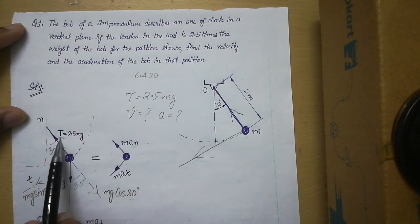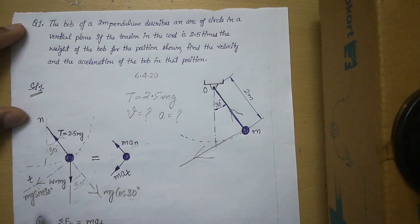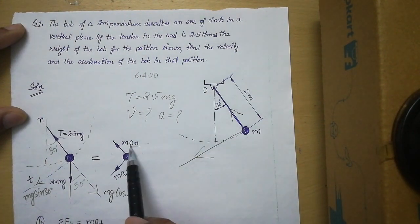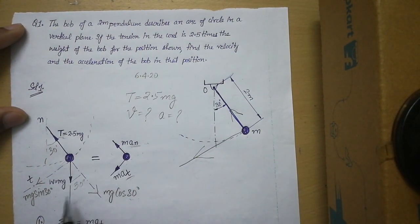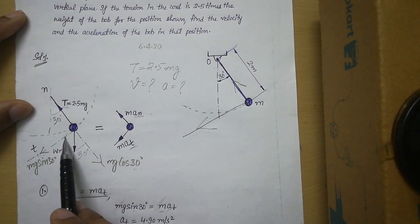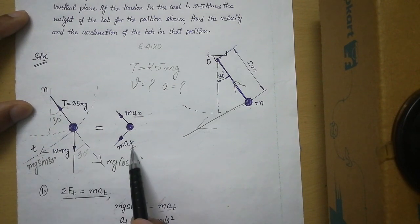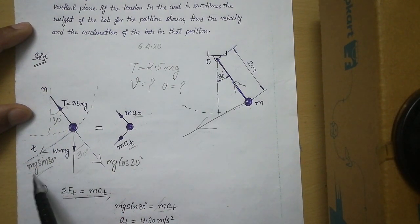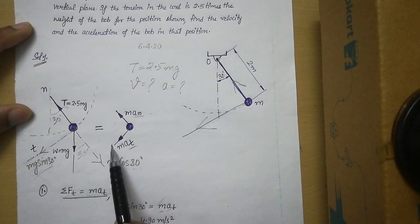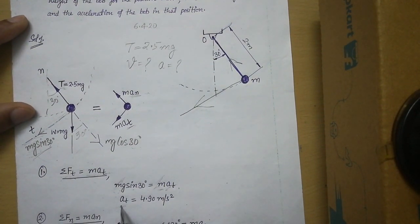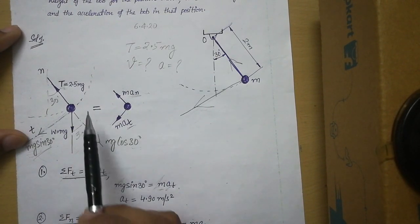We now have three forces: tension T, mg sin 30°, and mg cos 30°. This system gives two accelerations — tangential and normal. Applying the first equation, summation Ft equals m·at: the only force along the tangential direction is mg sin 30°, so mg sin 30° equals m·at. The mass m cancels out, giving us the tangential acceleration directly.